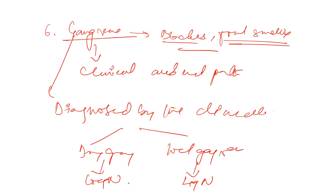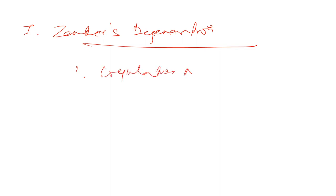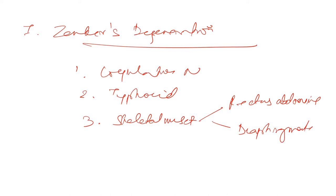The last type is Zenker's degeneration — it is a type of coagulative necrosis. It occurs in patients of typhoid and affects skeletal muscles, specifically the rectus abdominis and diaphragmatic muscles.